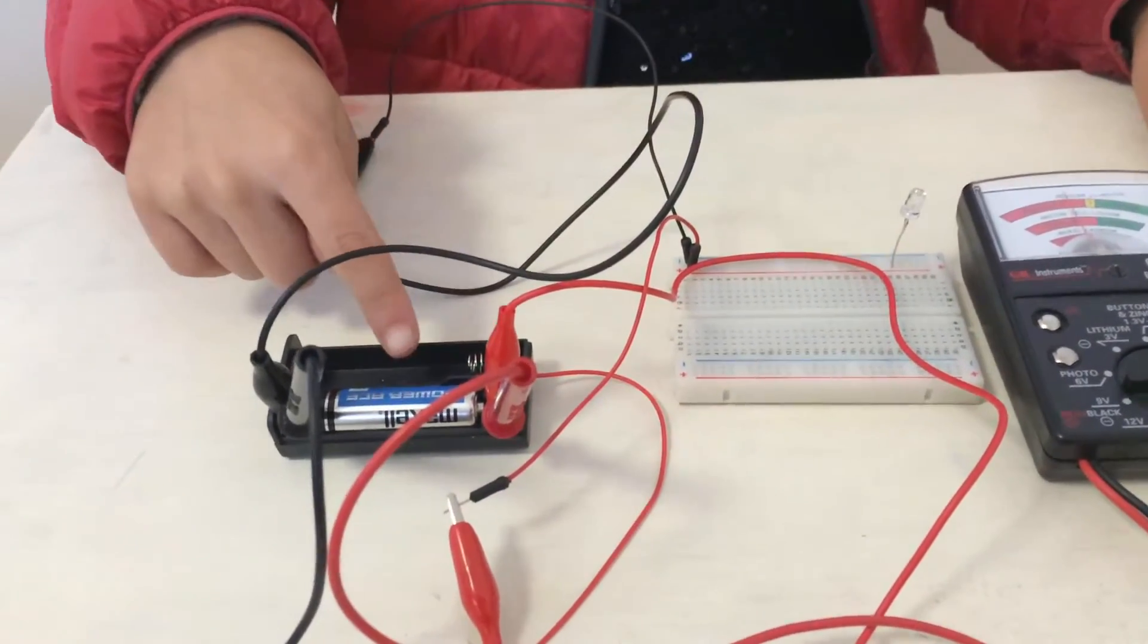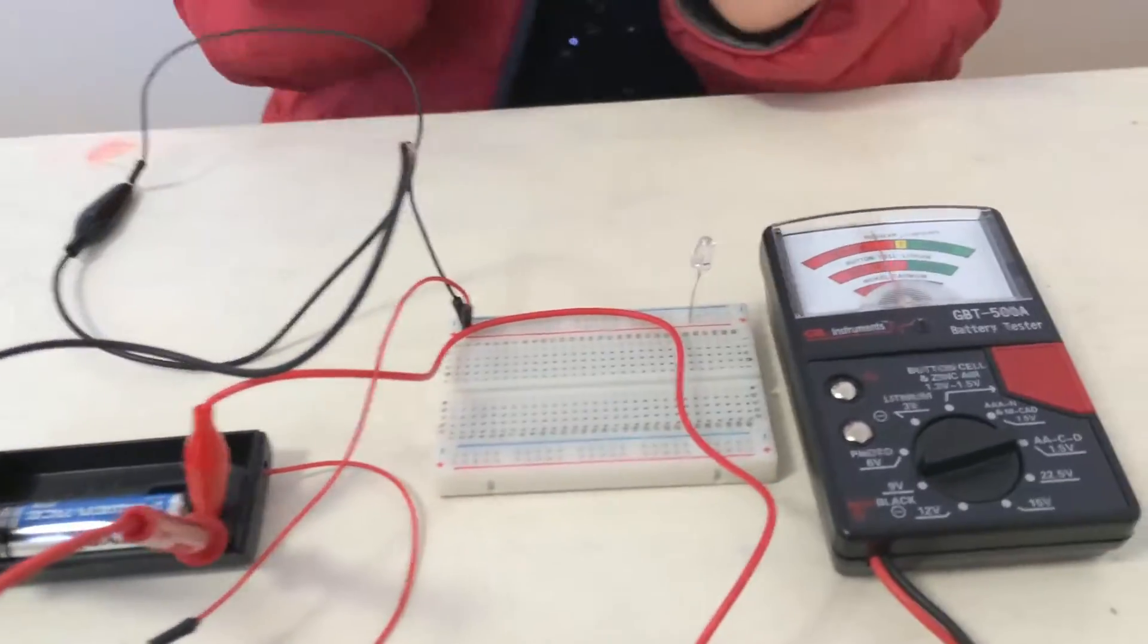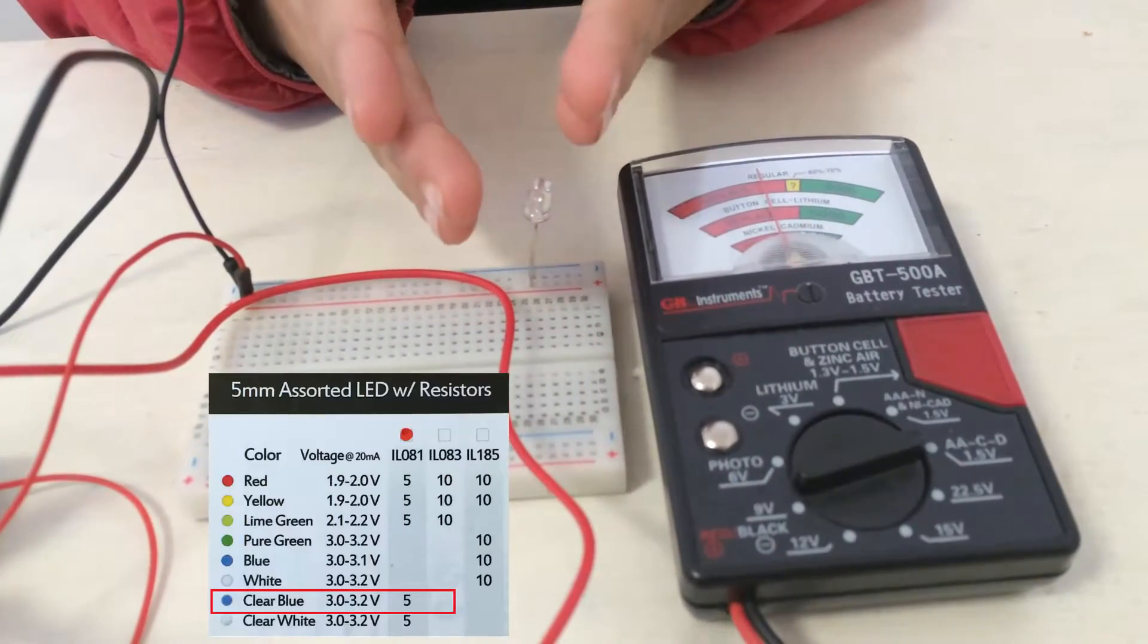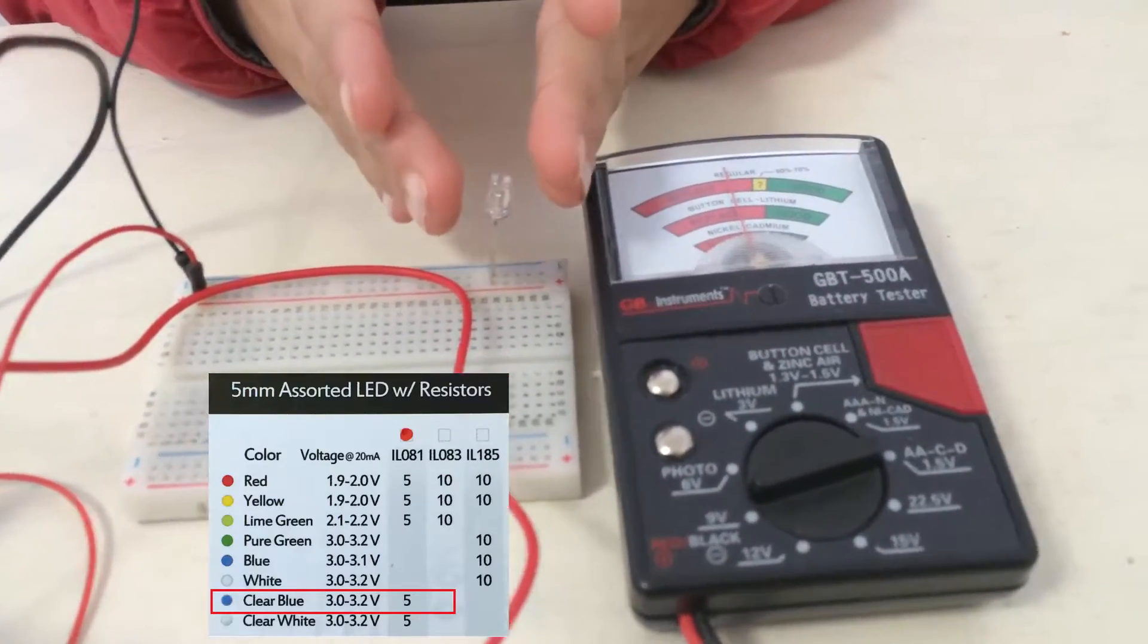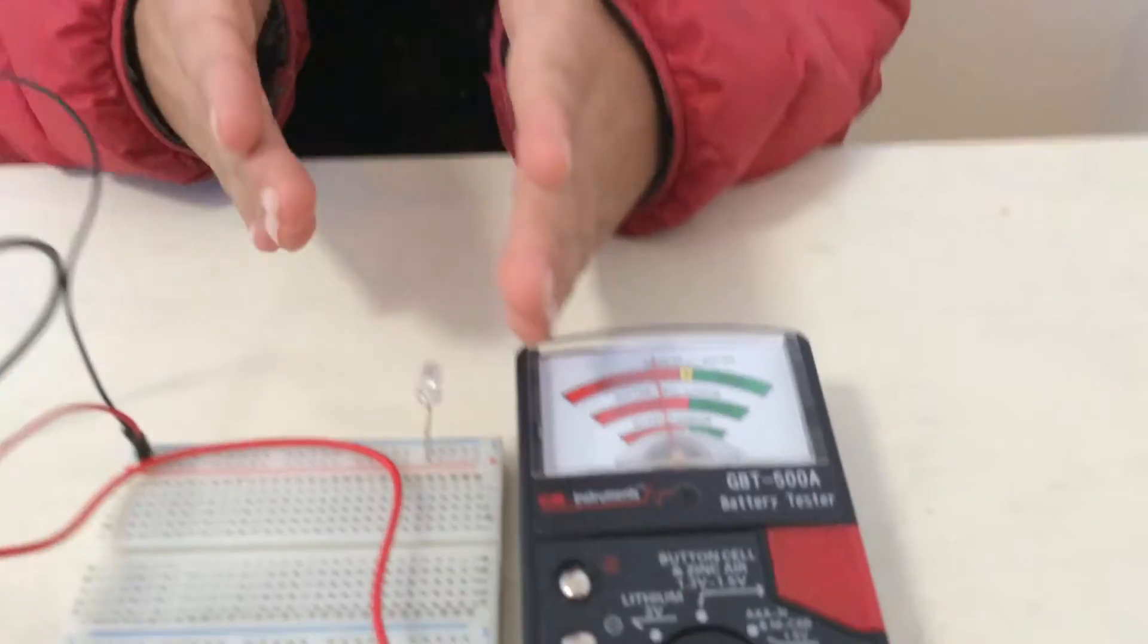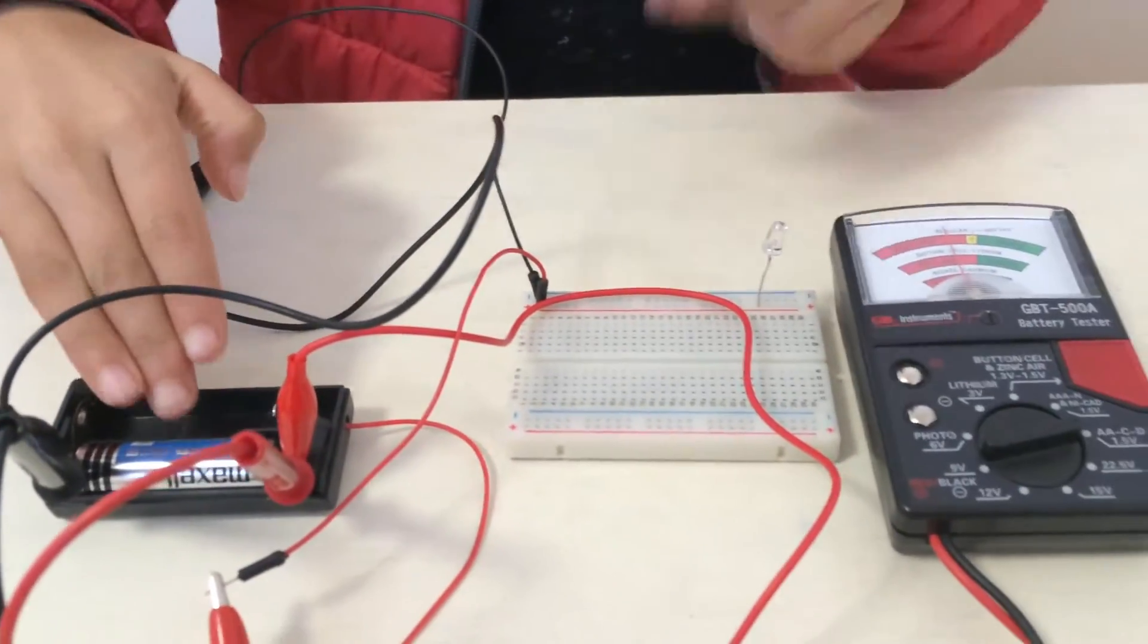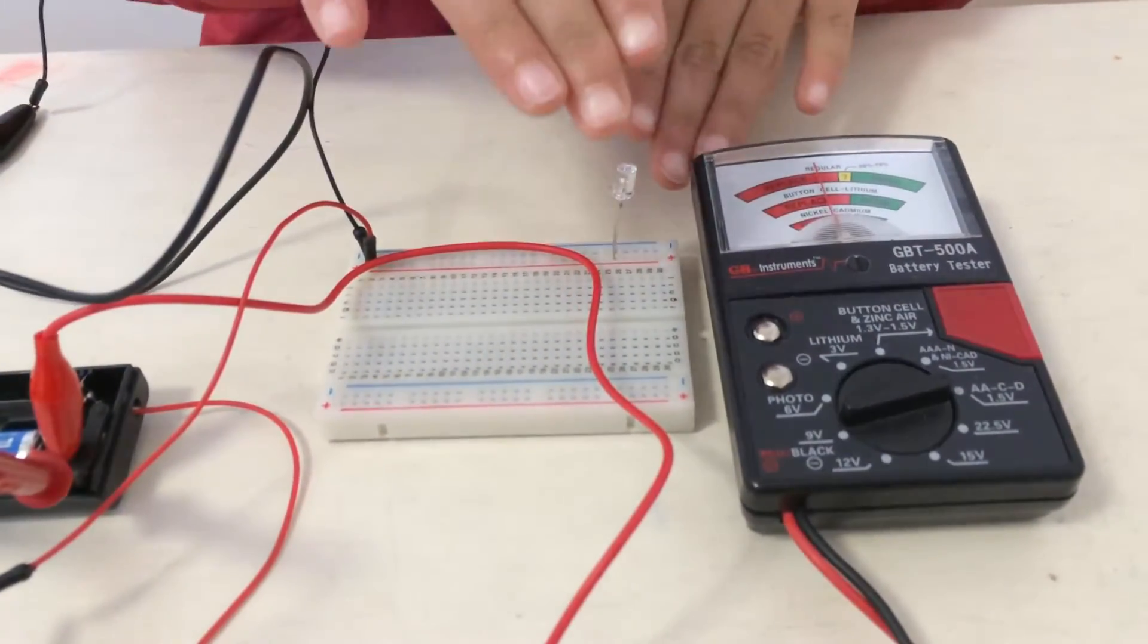This is a spent 1.5 volt battery connected to a blue LED which needs 3 volts to light it up. So there is no way this battery could light up this LED.